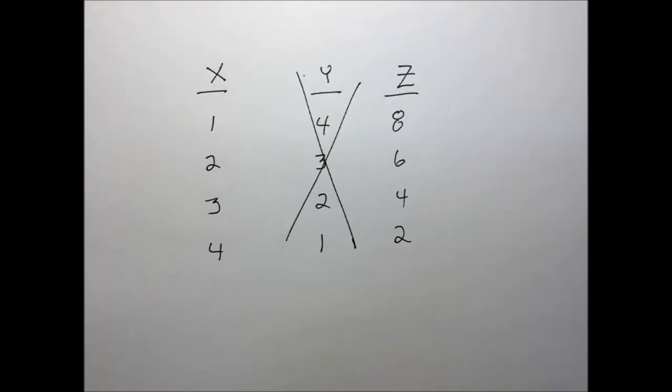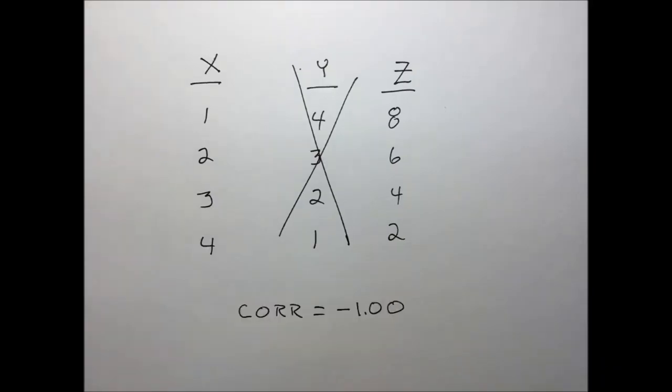In this slide, I've simply doubled the numbers in column z, so once again we still have a perfectly proportional pattern. Put these numbers into the formula, you will get a value of minus 1.0. The numbers run opposite of each other. If the numbers change in a regular manner with each other, you will get a large correlation.